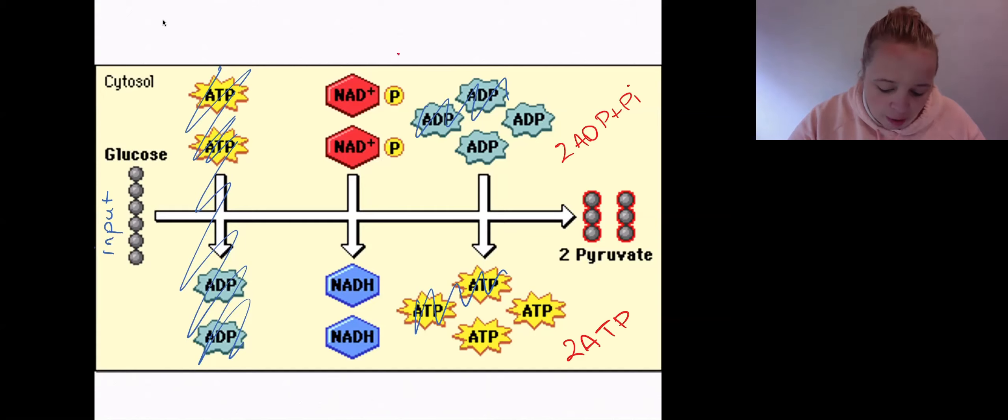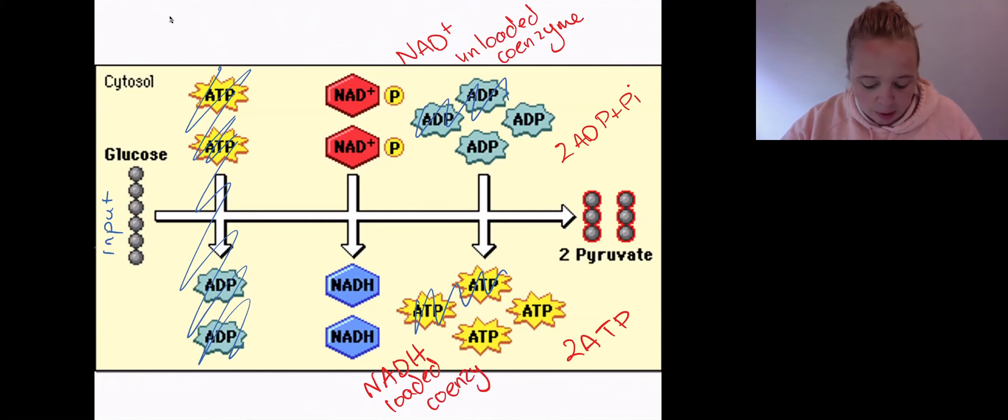You can see over here I've got NAD+. So this is a different electron carrier compared to what we used in photosynthesis. This one here is NAD+, so it's not NADP+ because we're not in photosynthesis anymore. We've taken away the P, no more photosynthesis, and now we're going to NAD+. So NAD+ is going to be our unloaded form of the coenzyme, unloaded coenzyme here. We're going to load it up with a proton and it's going to become NADH here. This is my loaded coenzyme. So that's the only new coenzyme I want us to learn today.